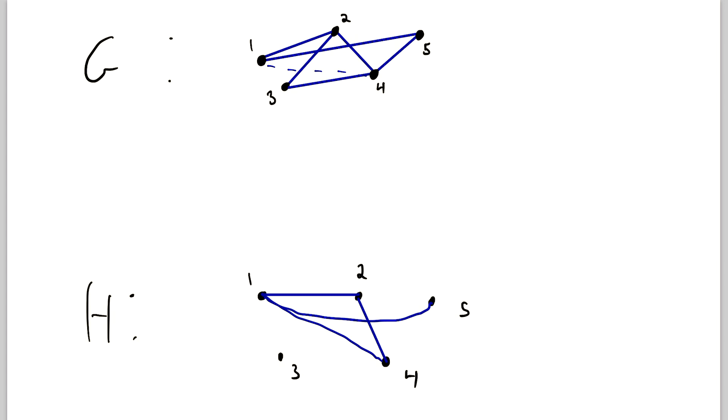So just to recap that one more time, a graph H is a spanning subgraph of G if H is a subgraph of G and the vertex set of H is equal to the vertex set of G. A spanning subgraph is a subgraph whose vertex set is equal to that of the graph that it's a subgraph of. And if it doesn't have the same vertex set, then it's not a spanning subgraph. And that's all there is to it.